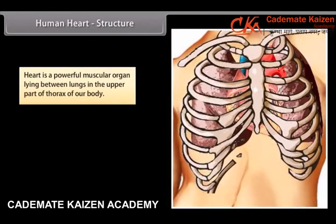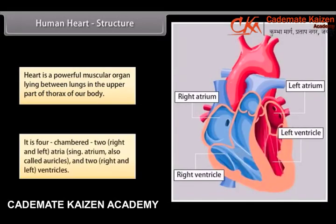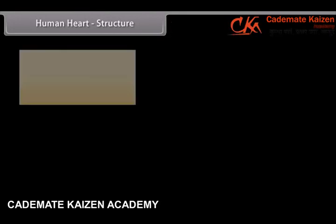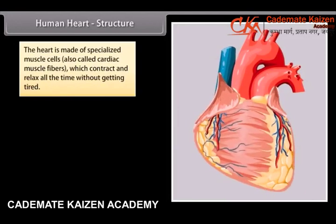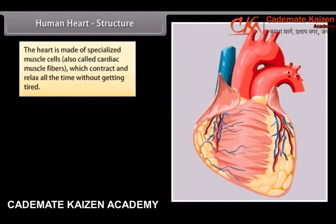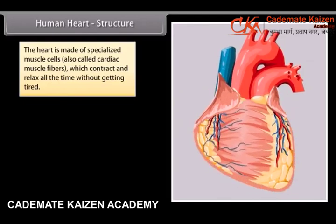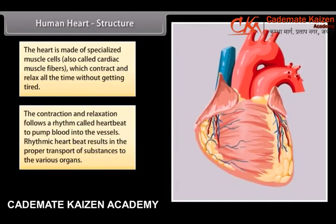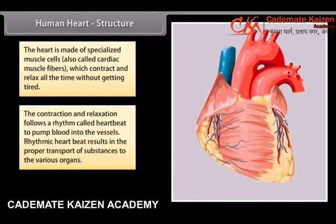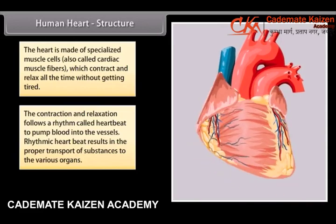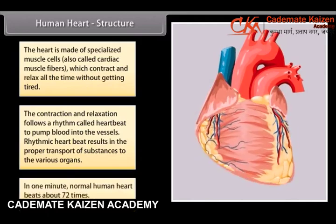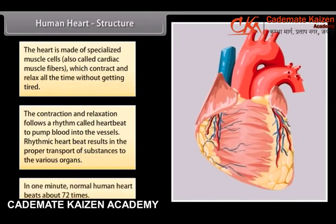Heart is a powerful muscular organ lying between the lungs in the upper part of the thorax of our body. It is four-chambered: two right and left atria, also called auricles, and two right and left ventricles. The heart is made of specialized muscle cells, also called cardiac muscle fibers, which contract and relax all the time without getting tired. The contraction and relaxation follows a rhythm called heartbeat to pump blood into the vessels. Rhythmic heartbeat results in the proper transport of substances to the various organs. In one minute, a normal human heart beats about 72 times.